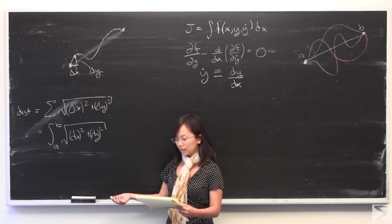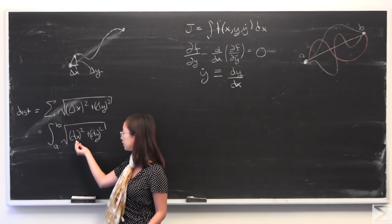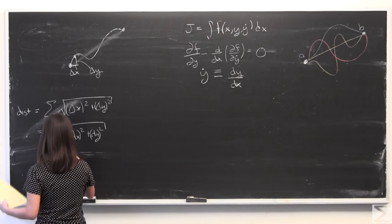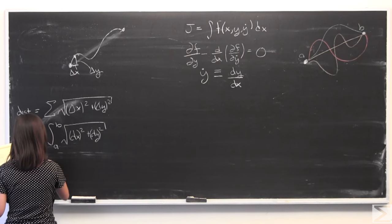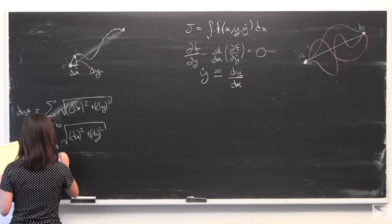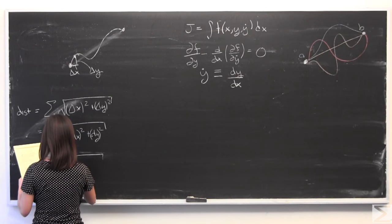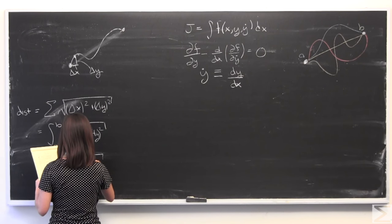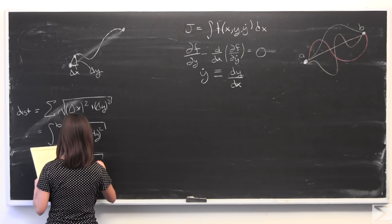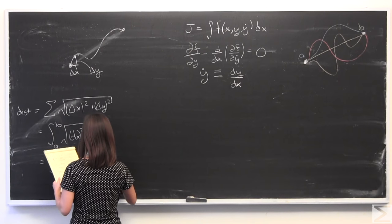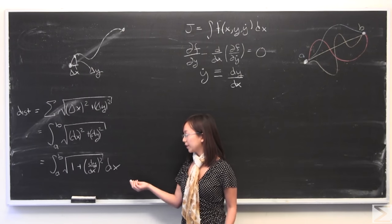OK. And now we have an integral. And now I'm going to pull out dx squared from the square root. And what that's going to make that turn into is something very cool. It looks like this.